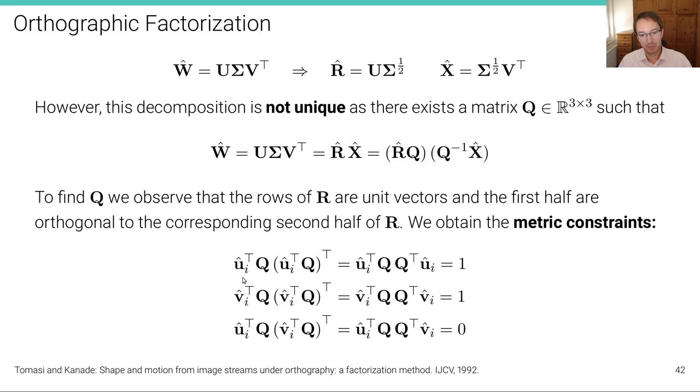So, right, so that means that if I take these vectors R, and I multiply them together, u_i^T Q Q^T u_i transpose, then that should be one. If I transpose this expression, I get this expression here.